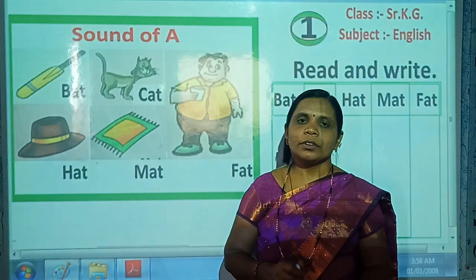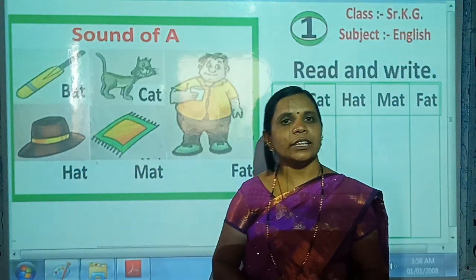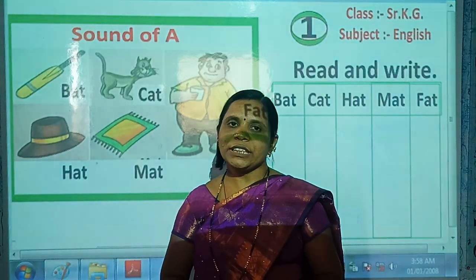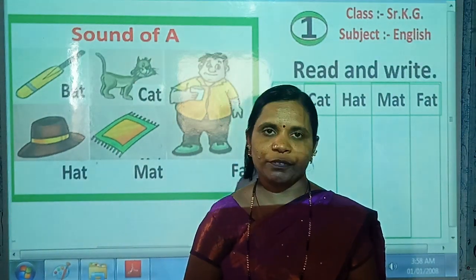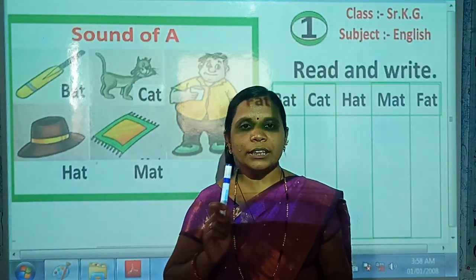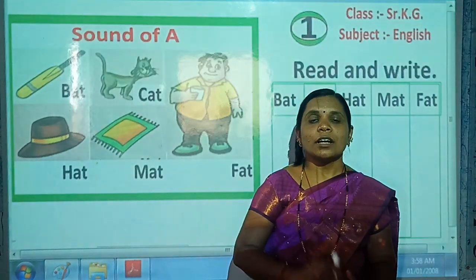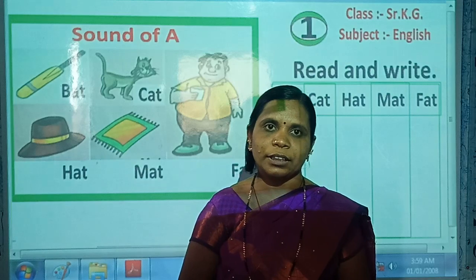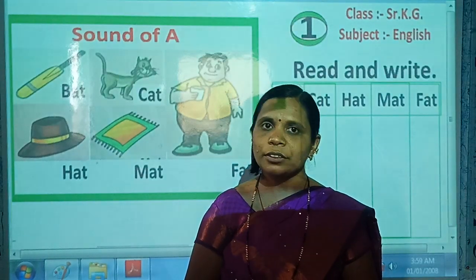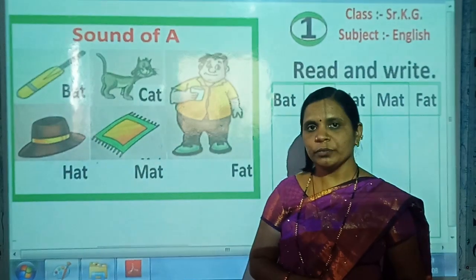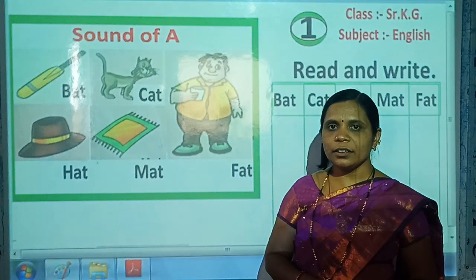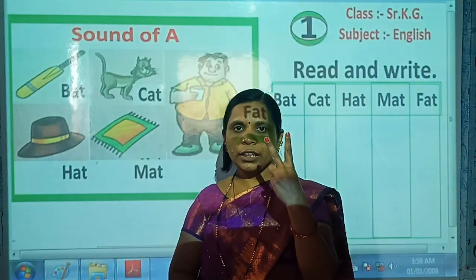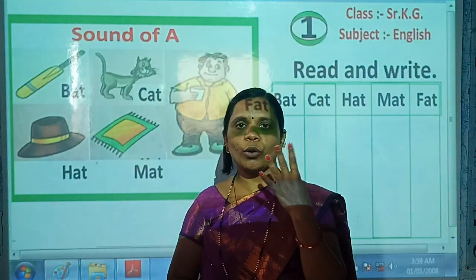Tell me, how many letters are in the English alphabet? Yes, 26 letters in the English alphabet. In those 26 letters, how many sounds or vowels are there? Correct, 5 sounds are there. Which are they? Yes — A, E, I, O, U.